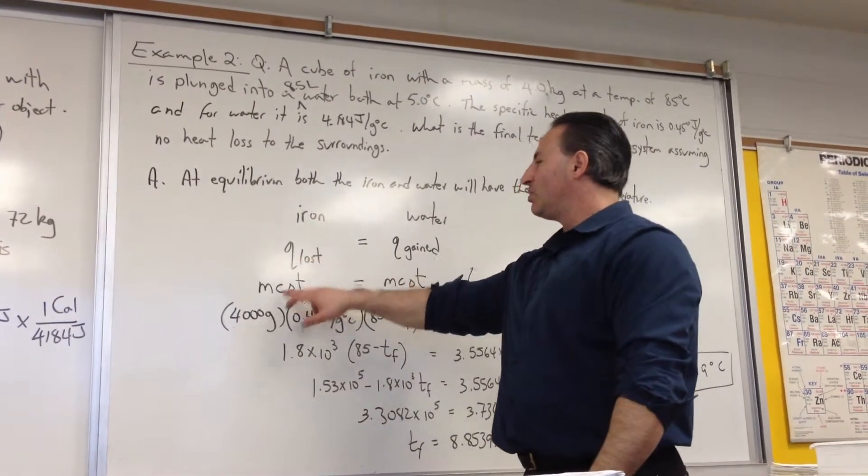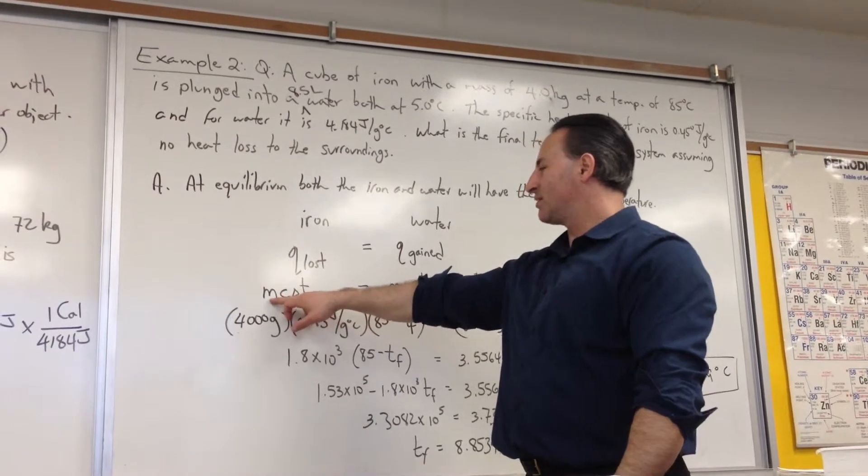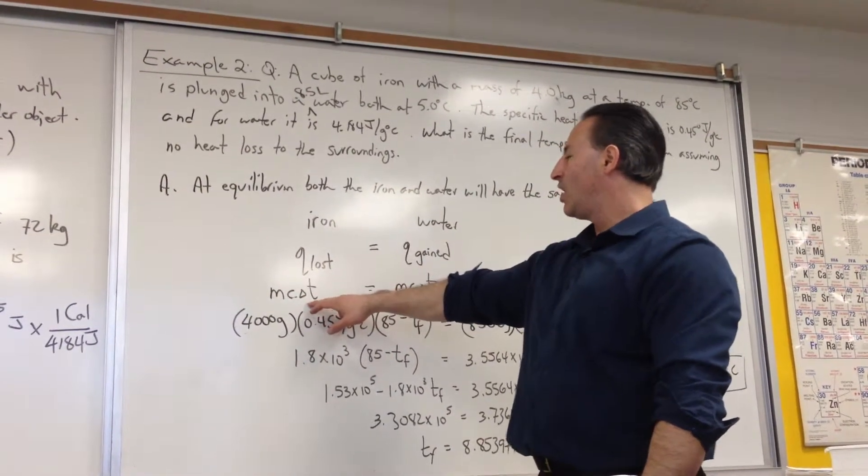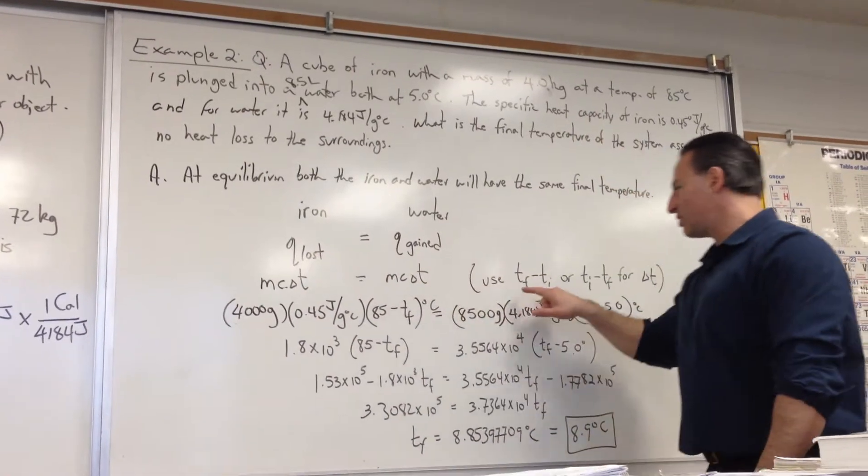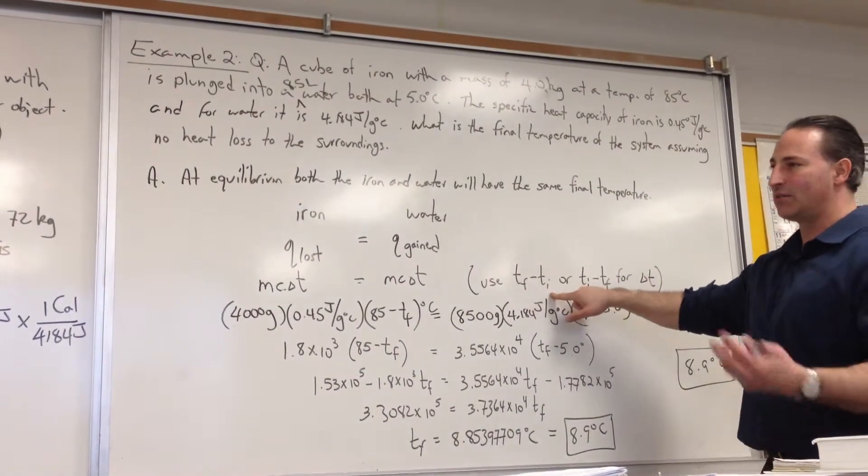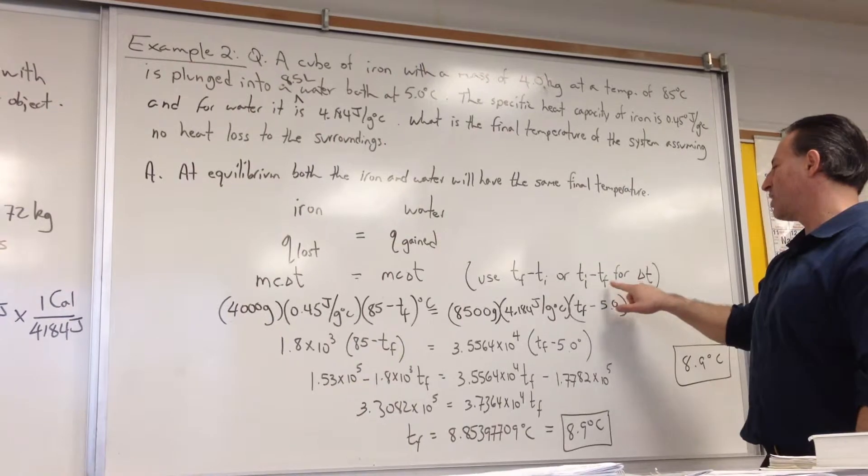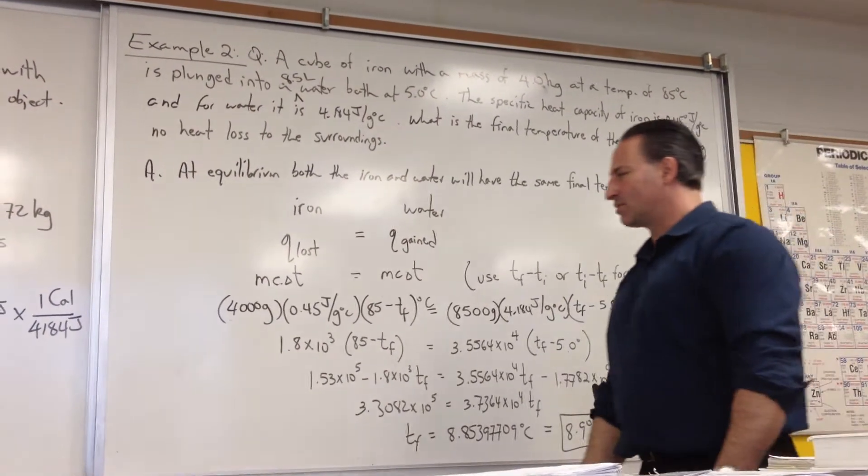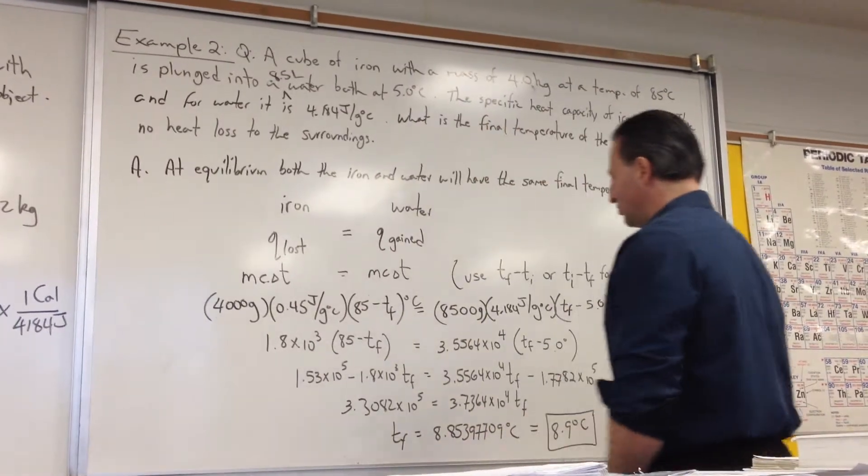We substitute Q with M as C equals delta T, where M is the mass of the substance, C is the heat capacity of the substance, and the change in temperature is delta T. We also substitute delta T with Tf minus Ti, T final minus T initial, or T initial minus T final, just to keep all the values positive, so we don't complete the calculation with negative values that we have to keep track of.